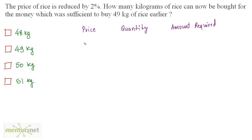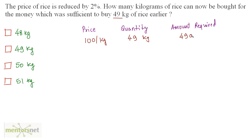Let us assume that earlier the price of rice was 100 rupees per kg and the quantity that was bought was 49 kilograms. So the amount required, if the price is 100 rupees per kg and the quantity is 49 kg, will be 100 times 49 — that is 4900 rupees to buy 49 kg of rice.